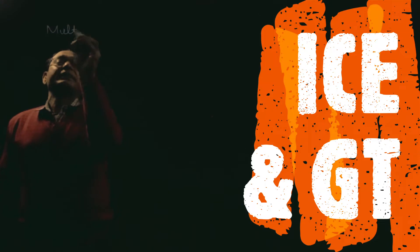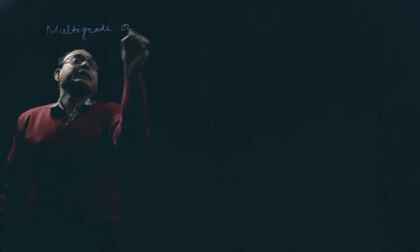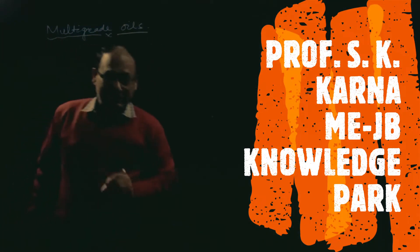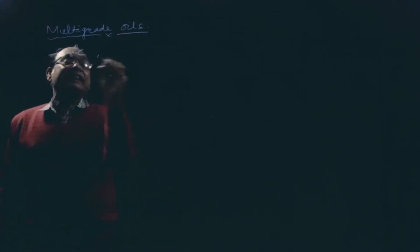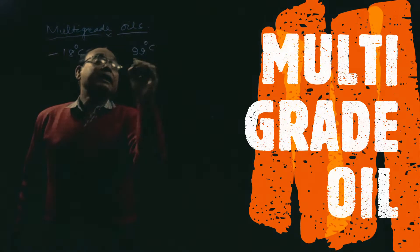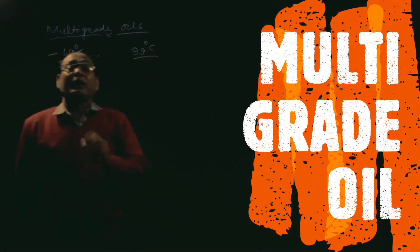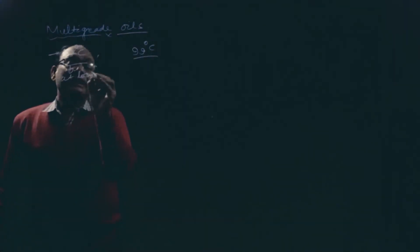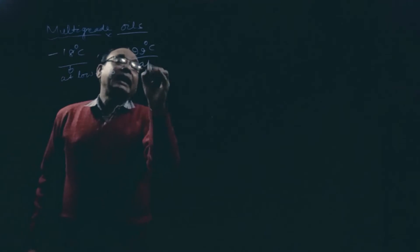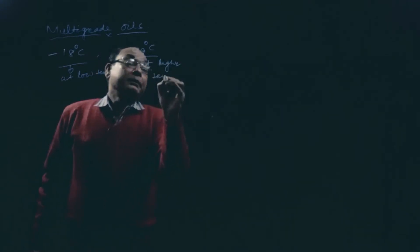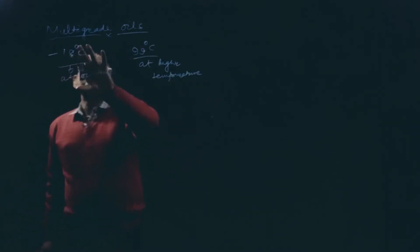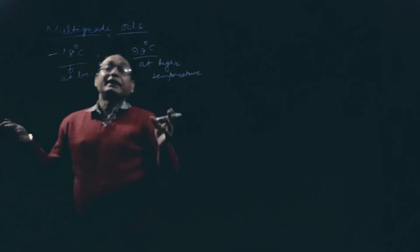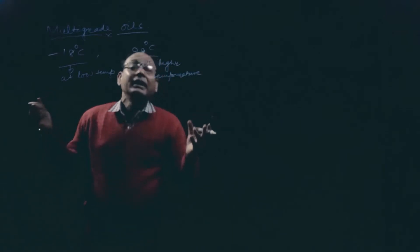Now I am going to discuss multigrade oils. In the last class we discussed SAE rating of oil, one at minus 18 degree centigrade and another at 99 degree centigrade. Some lubricating oils were used at low temperature and some at high temperature. But it is not possible to use these oils at both levels because they are totally different — they have different viscosity values at different conditions.